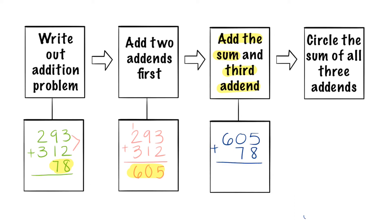5 plus 8 equals 13. Let's carry the 1. 7 plus 1 is 8 and 6 plus nothing is 6. Lastly we're going to circle the sum of all three addends which we know is 683 and we can go ahead and write that in on our original problem, 683.